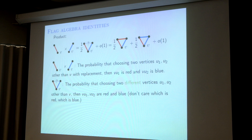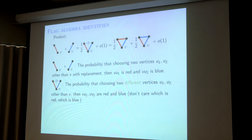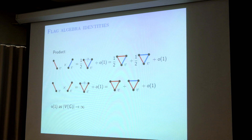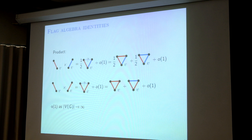So you see: this is the probability of choosing two vertices u1, u2 other than v, where first is red and second is blue, and this is just choosing two different vertices. And for red times red: this time I don't have the coefficient one-half because they are the same — I choose the first is red, the second is also red. And because this little correction comes from the probability of choosing two vertices to be the same, it goes to zero as n goes to infinity.